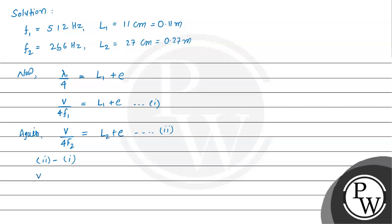So this will become v divided by 4f2 minus v divided by 4f1 equal to L2 plus e minus L1 plus e. So this will be v divided by 4, and this is 1 divided by 256 minus 1 divided by 512, and this equals L2 minus L1. So this is 0.27 minus 0.11.